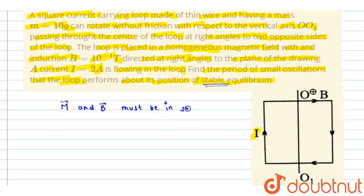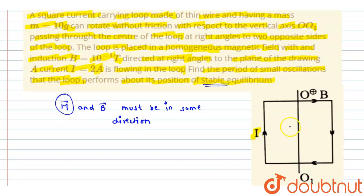The direction of the magnetic field induction is cross polarity, meaning it is directed inside the screen. To find the direction of the magnetic moment, we use the right-hand thumb rule: curl the right-hand fingers in the direction of the current. If the current is clockwise, the thumb points inside the screen, giving the direction of the magnetic moment inside the screen. Hence, m and B are in the same direction, confirming stable equilibrium.